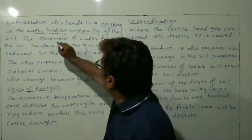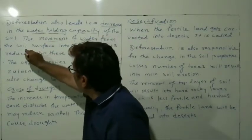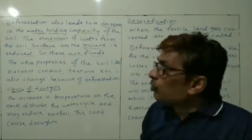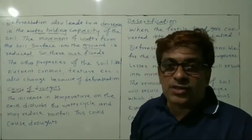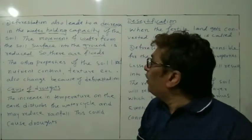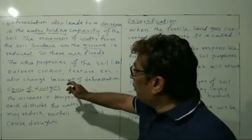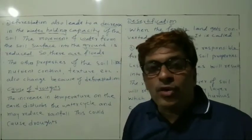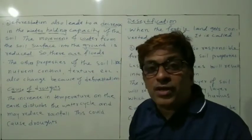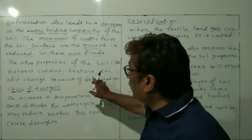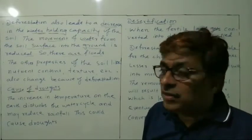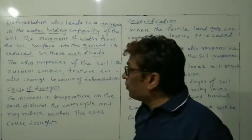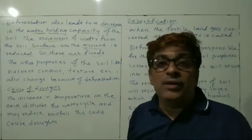Because the movement of water from soil surface into the ground is reduced, floods also occur — water holding capacity is reduced. Other properties of the soil, like nutrients contained in soil and its texture, also change because of deforestation. These are all consequences of deforestation.